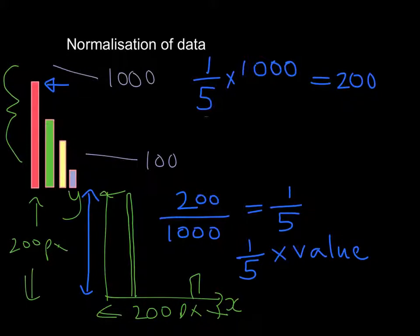which is represent this data to fill the whole graph that we have here, which is this 200 pixels. We can take our smaller value, which is 100. I'm going to take one-fifth, multiply that by 100, and that is going to be equal to 20.